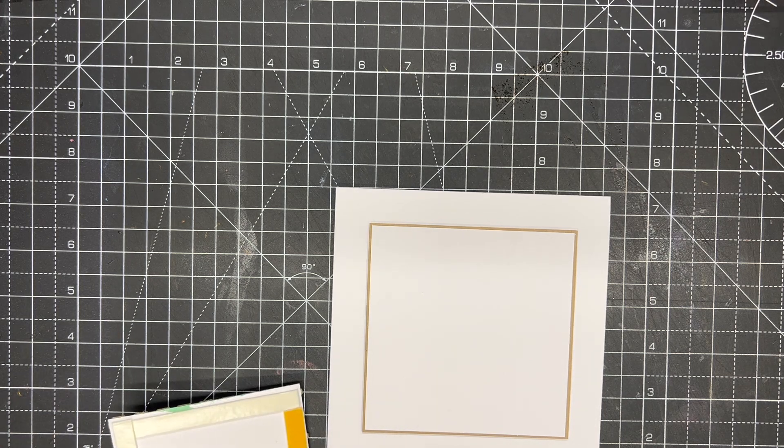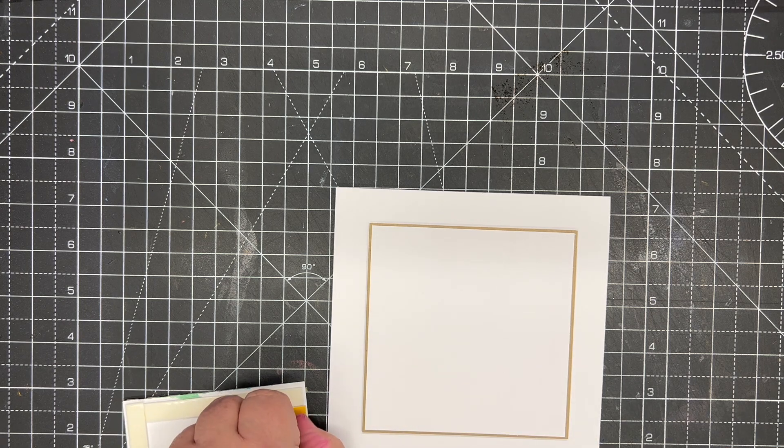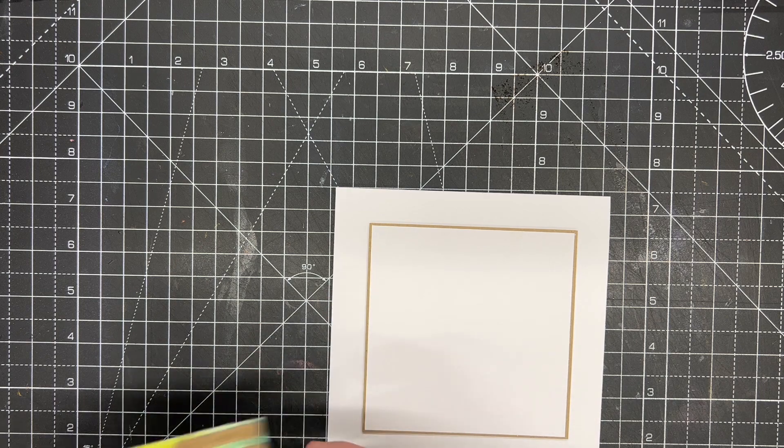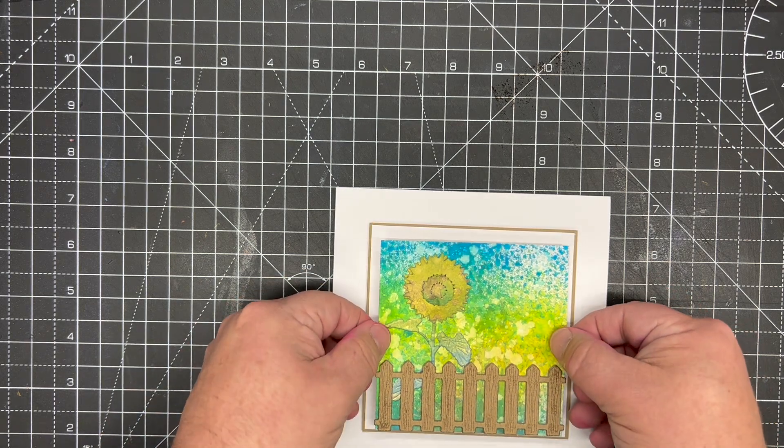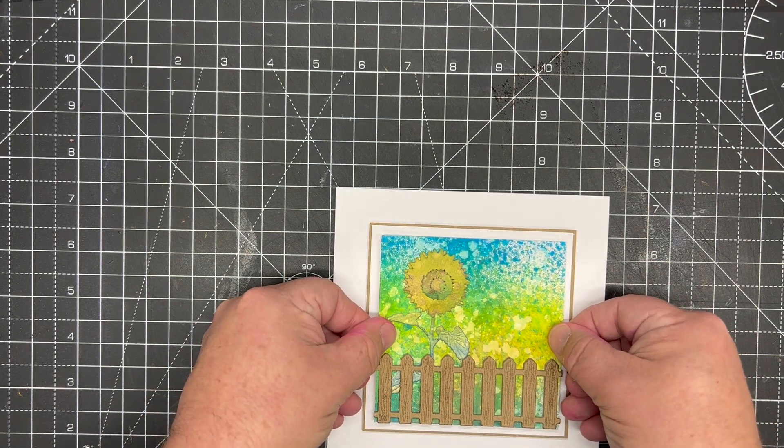And then it's onto a five inch card blank giving us a beautiful border all the way around. We could add a sentiment onto this afterwards, but I'm just going to position that in the middle.